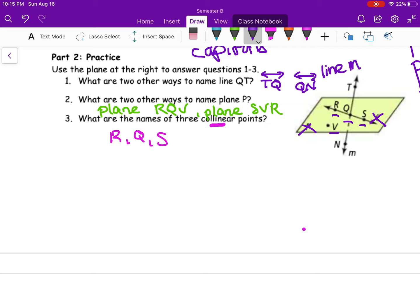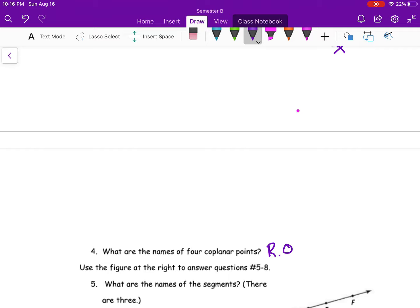Again, because L names that line, P names the plane, T is off of the plane, so is N, and M names that line. So R, Q, S, and V.